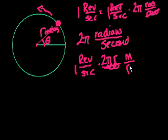Meters per revolution, that's just the circumference of the thing, of the circle. And that equals, the revolutions cancel out, 2πr meters per second.